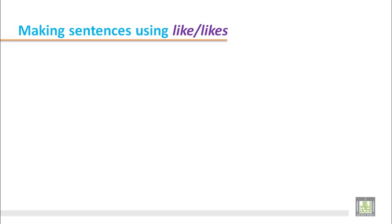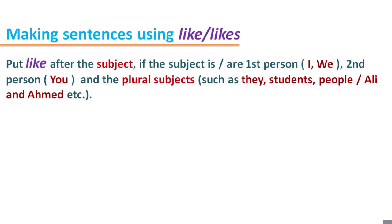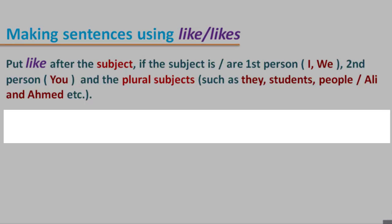Making sentences using like or likes. Put like after the subject if the subject is first person — I, we — second person — you — and the plural subjects such as they, students, people, Ali and Ahmed, etc.